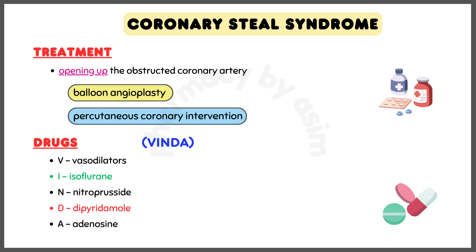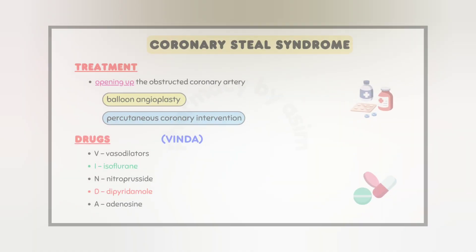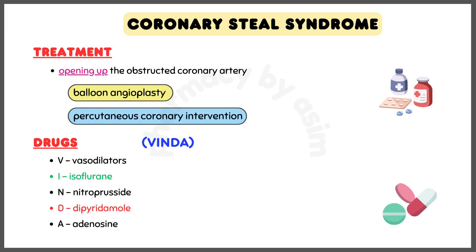Here are some drugs which can cause Coronary Steal Syndrome. Remember the mnemonic VINDA: V for vasodilators, I for isoflurane, N for nitroprusside, D for dipyridamole, and A for adenosine.